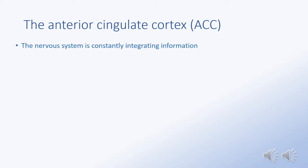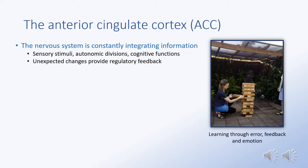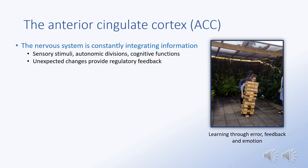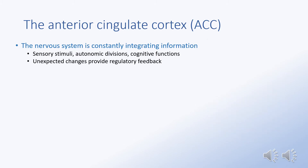The nervous system is constantly integrating information from sensory stimuli, autonomic divisions, or the processing of cognitive functions. When an unexpected change occurs, the difference, termed an error, provides allostatic feedback alerting attention and guiding behavior. In other words, how we respond to available feedback contributes to who we are emotionally as a person.